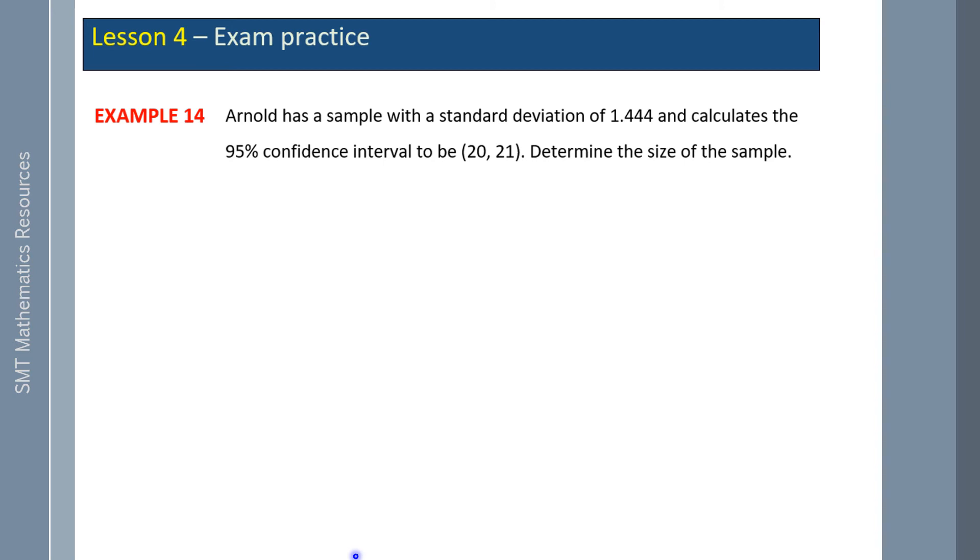Arnold has a sample of the standard deviation of 1.444 and calculates the 95 percent confidence interval to be between 20 and 21. Determine the size of the sample. Here we have a z-score of 1.96 because we have a 95 percent confidence interval. Now x-bar is the average of 20 and 21, which is 20.5. Hence, if I want to see what my sample mean plus the margin of error must have been to produce an upper value of 21, I can use those values. Z is 1.96, s is 1.44, and I just don't know what n was.